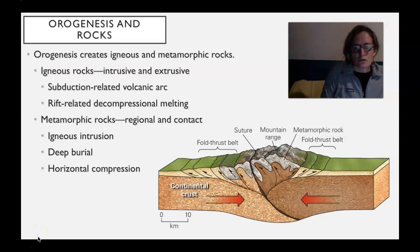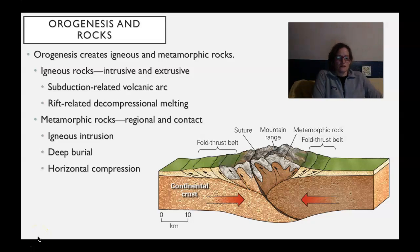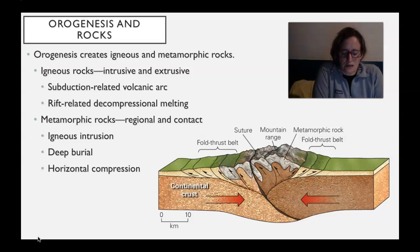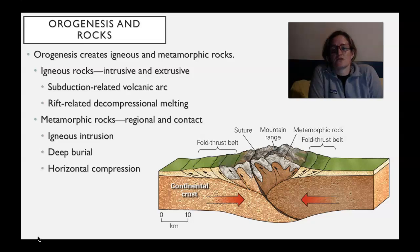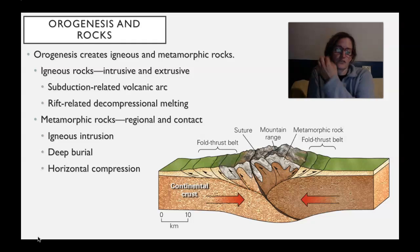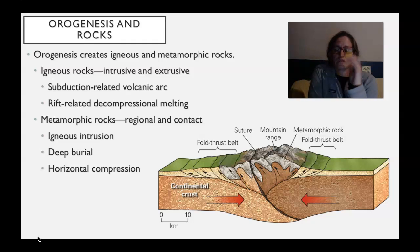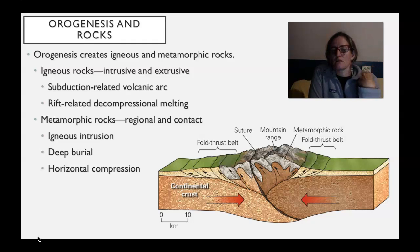Let's talk about rocks and plate tectonics as it relates to mountain building and deformation. Orogenic events are going to create two crystalline rock types: igneous and metamorphic rocks. Certainly there's going to be some sediment shed off of those igneous and metamorphic rocks during and after the orogenesis, but mostly we're thinking about igneous and metamorphic rocks in mountain building.